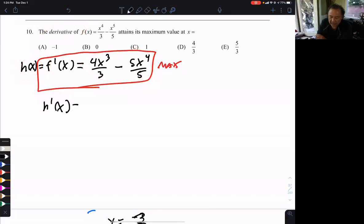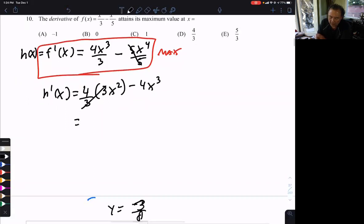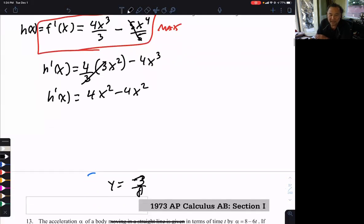So I take the derivative of h, which is 4 thirds, and then I bring the 3 in front and decrease the power by 1. And those cancel, and it's going to be 4x cubed. So the 3's cancel. There's the derivative of h.